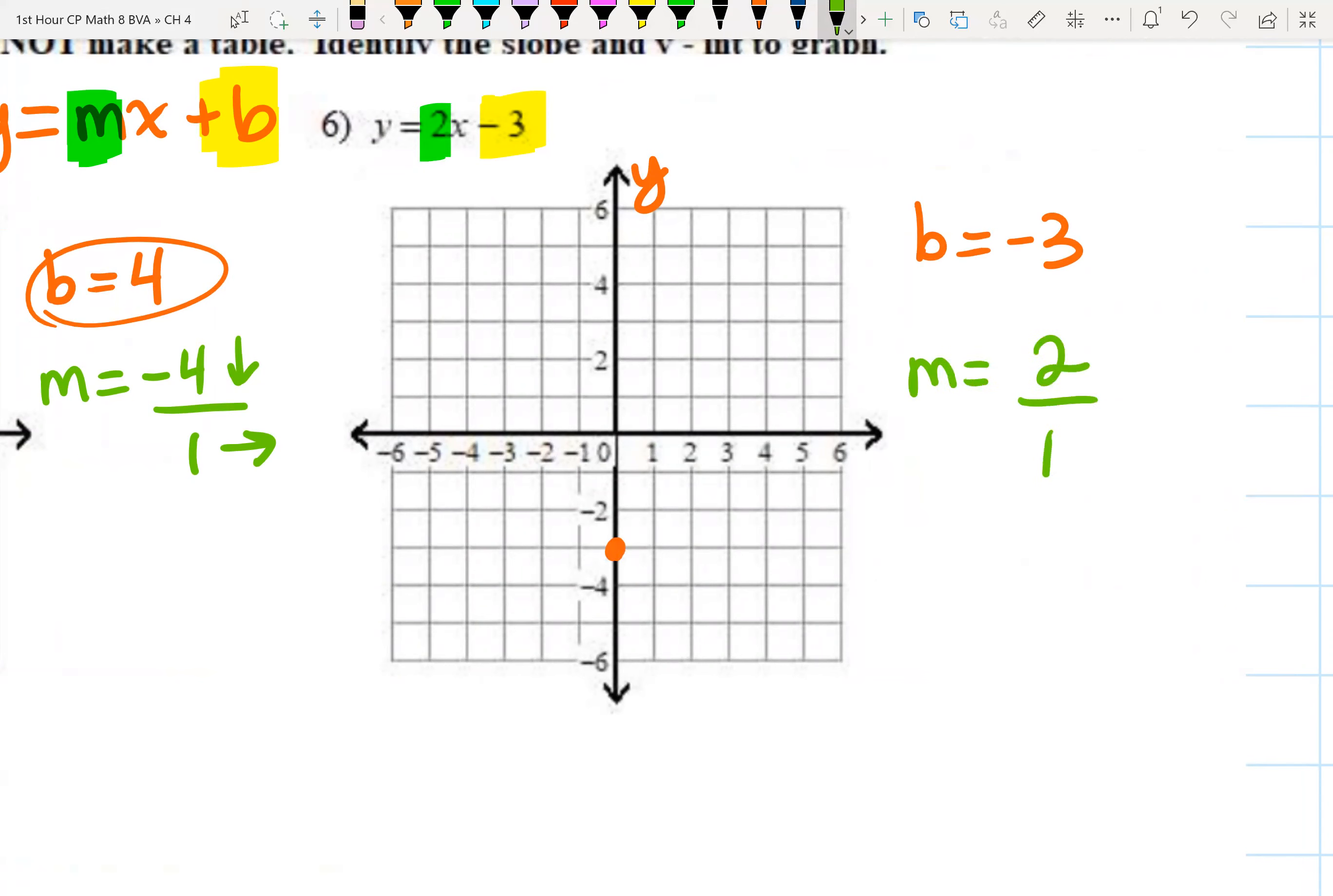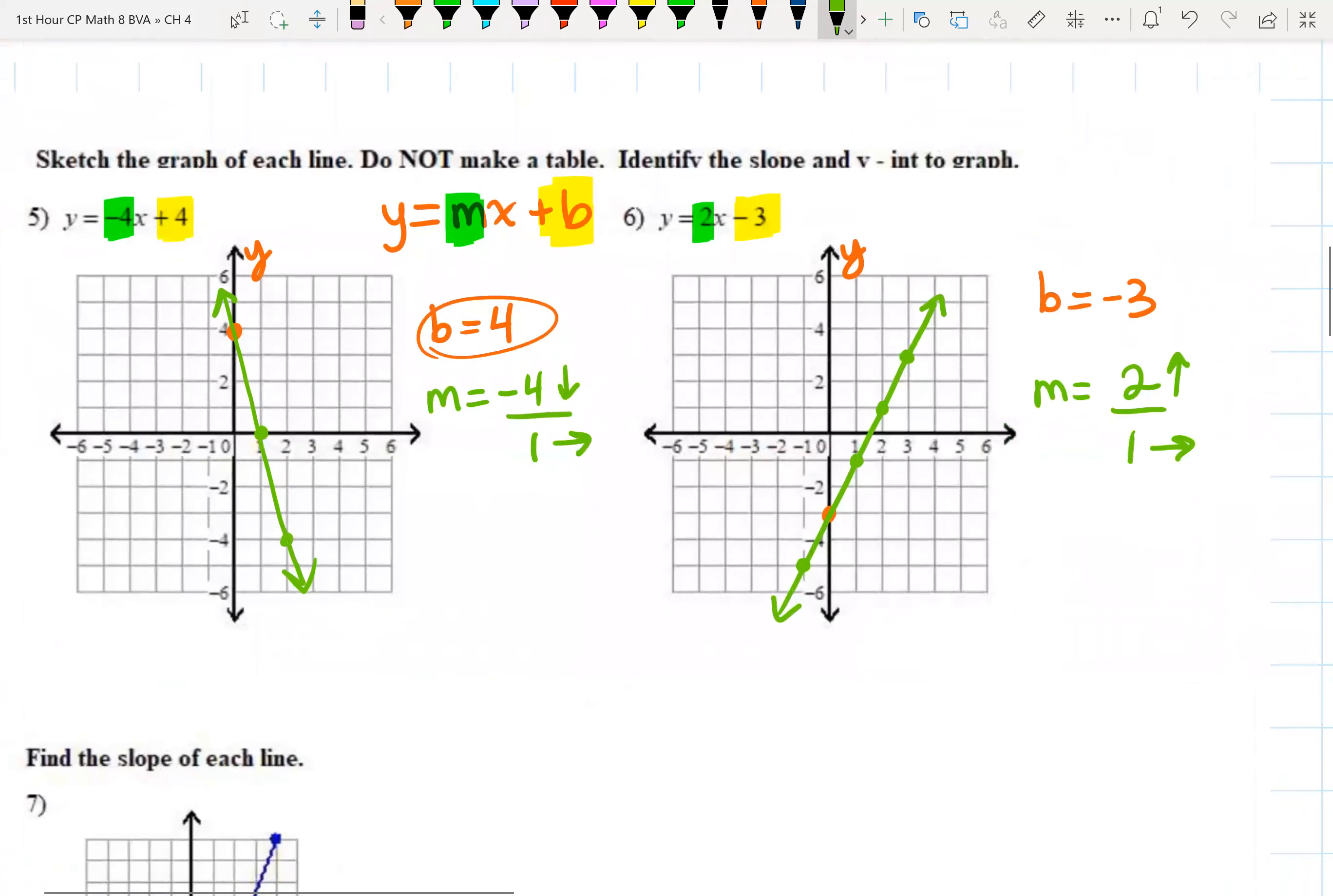Now that's positive, so you're going to be going up two to the right one. From the y-intercept, go up two to the right one several times, continuing going up two to the right one. Again, you can reverse this pattern and go in the opposite direction to plot a point to the left of your y-intercept. That's plenty of points. Go ahead and take your ruler and draw your line through your points, and you've got two great graphs without having to make a table.